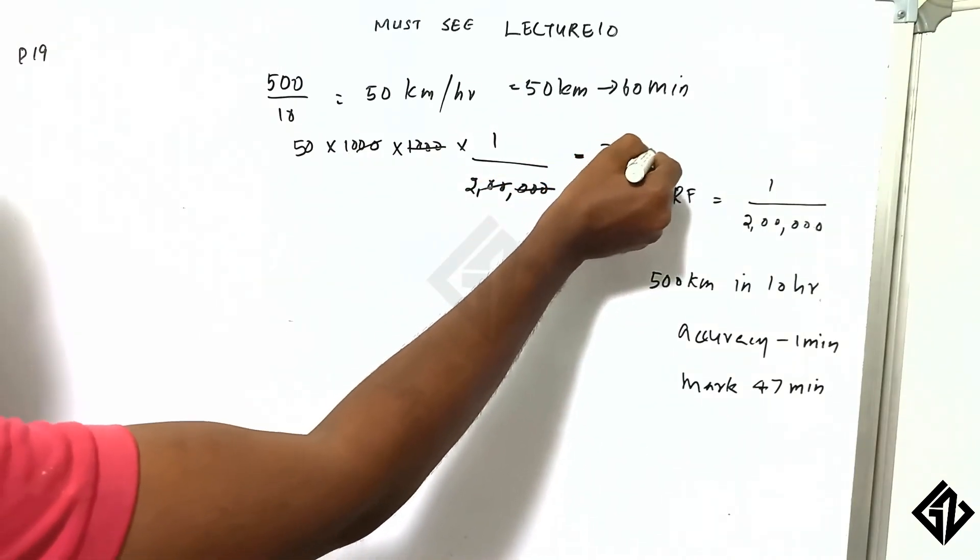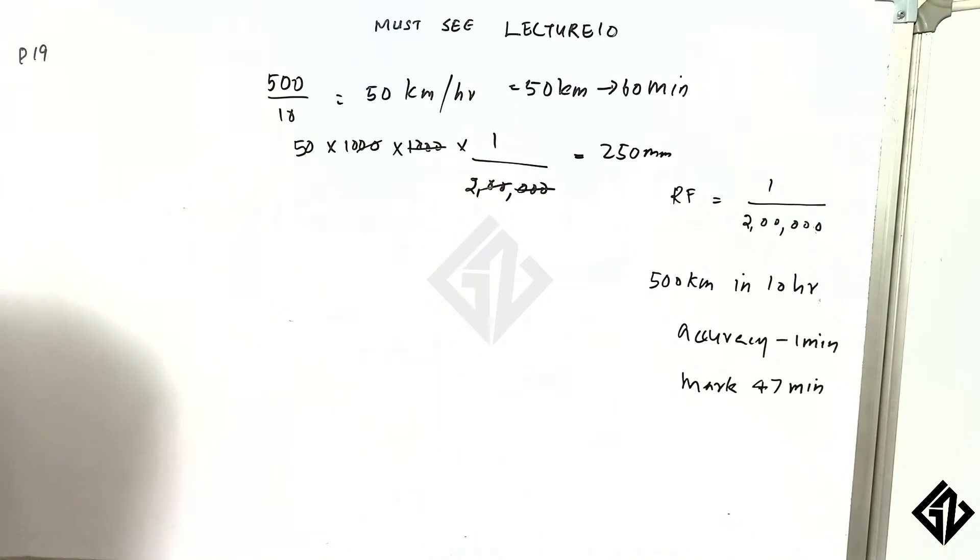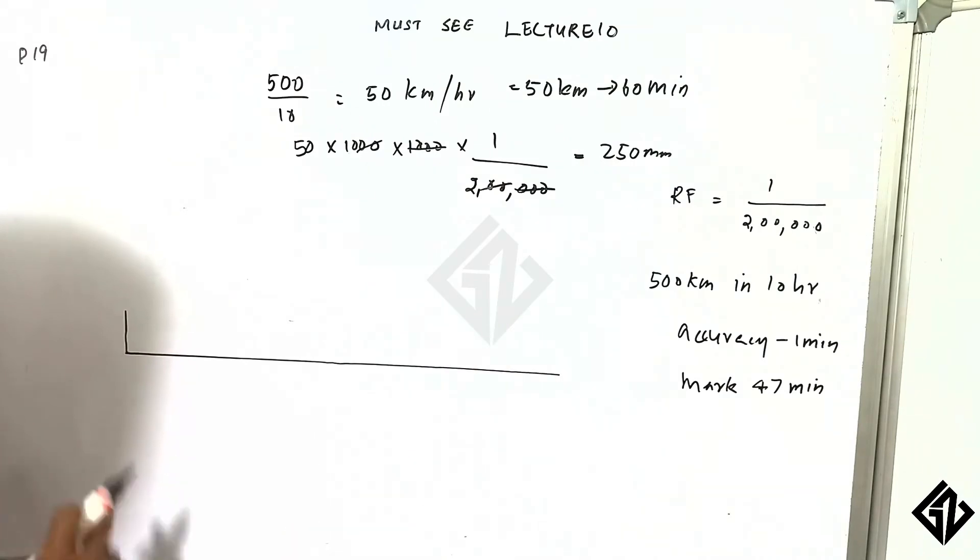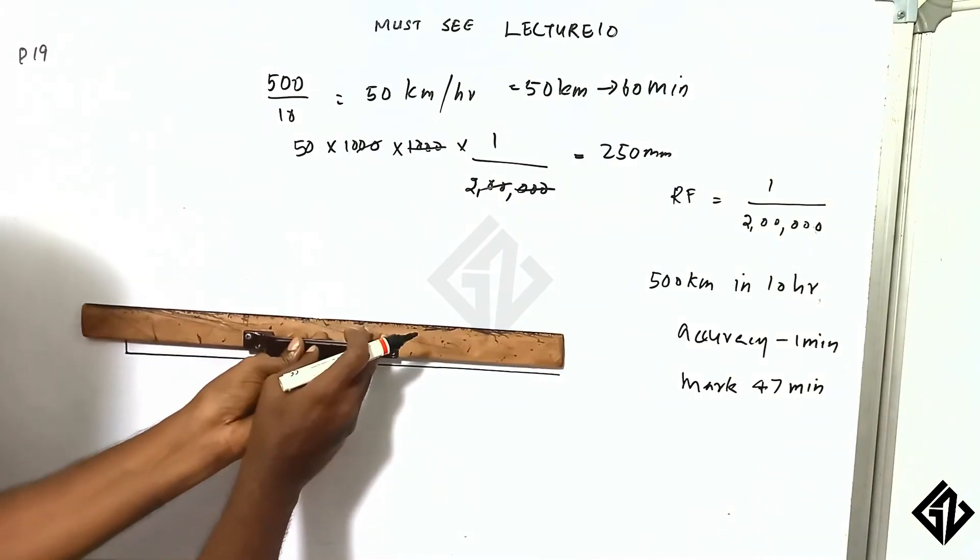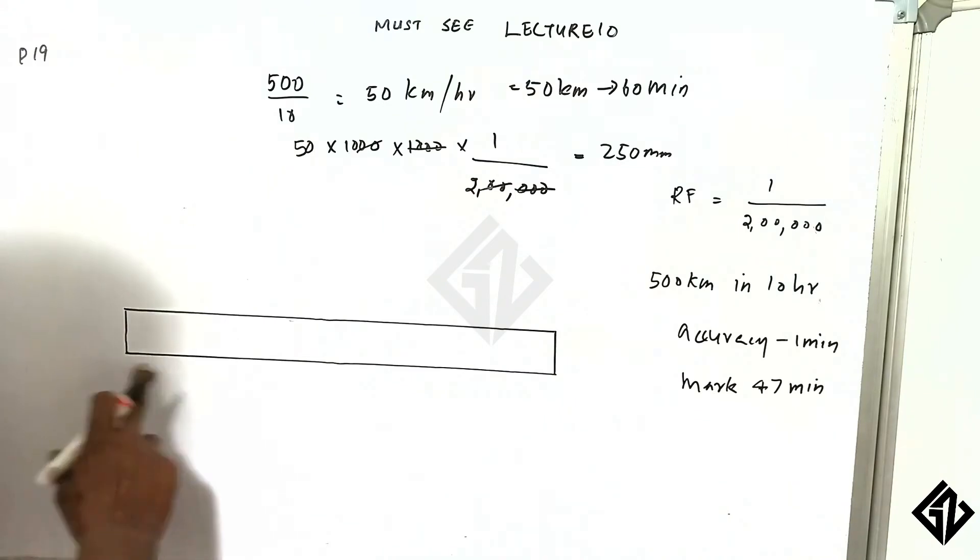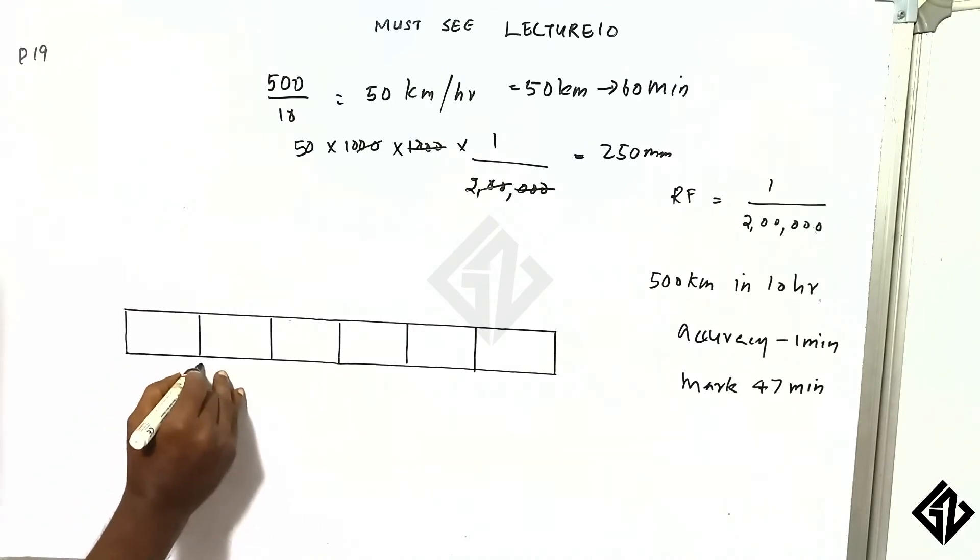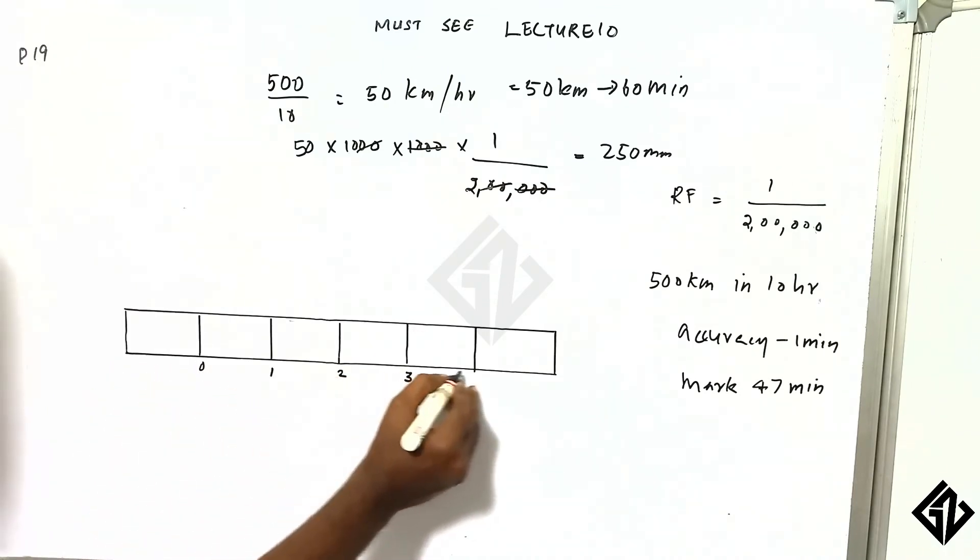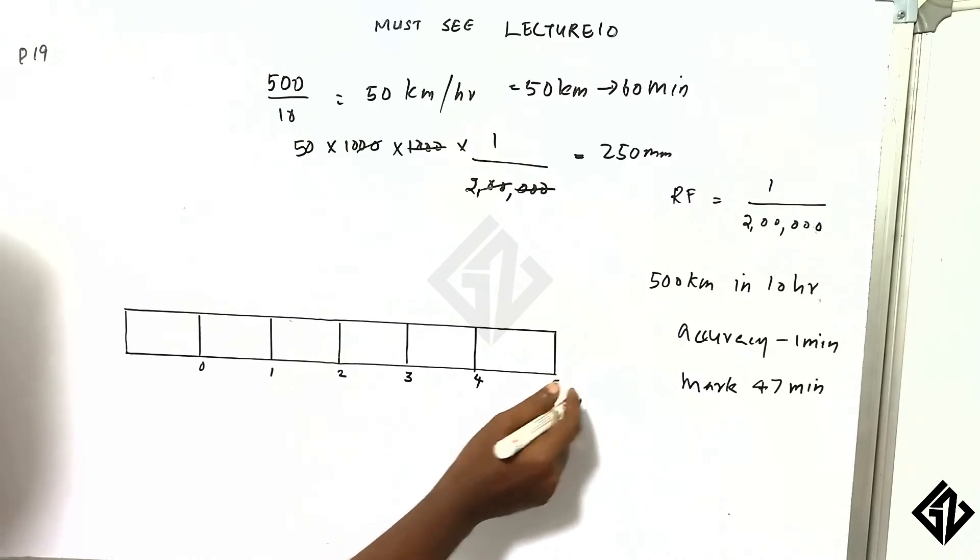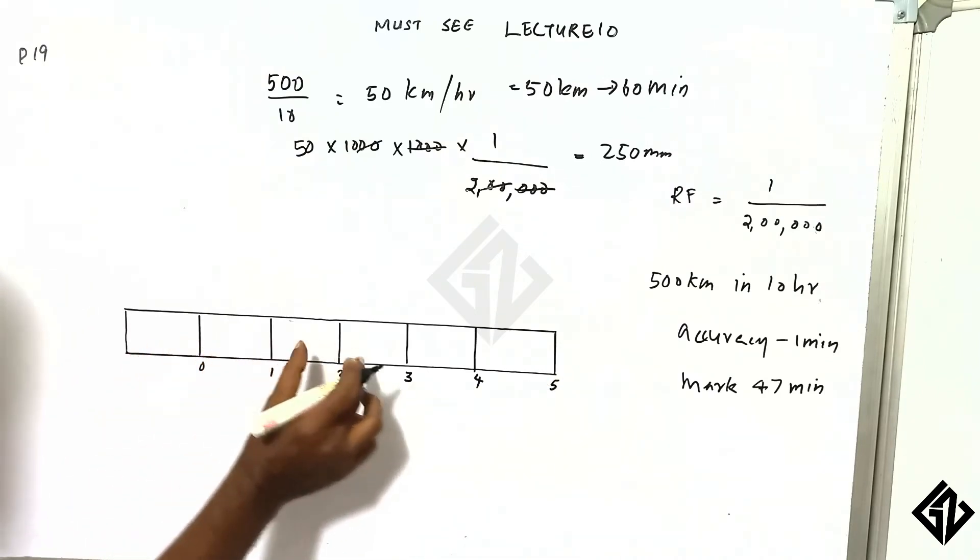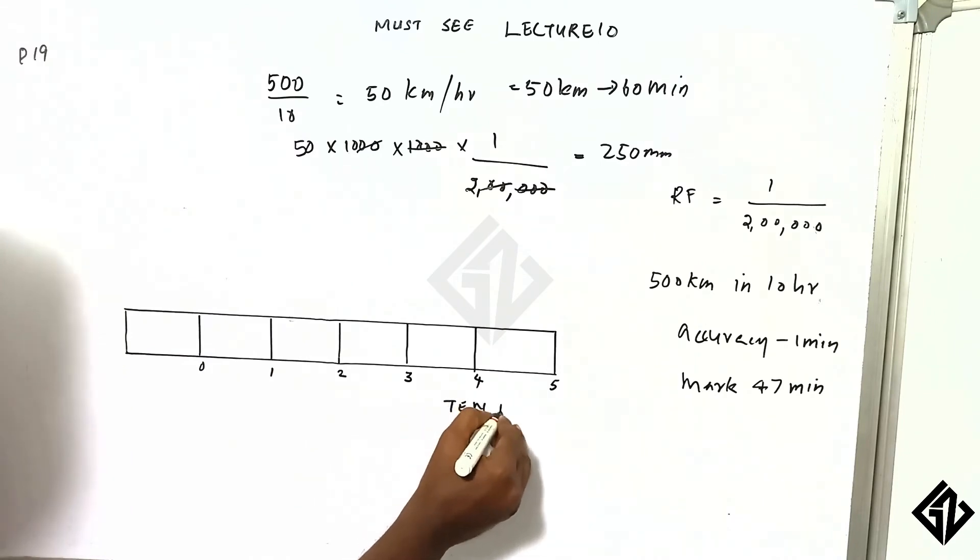2050mm represents 60 minutes in a rectangle. So how do I divide it? I'm going to write 0, 1, 2, 3, 4, 5, and it's 10 minutes in each section.